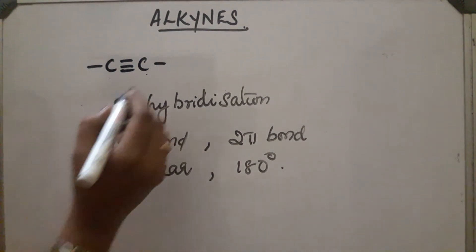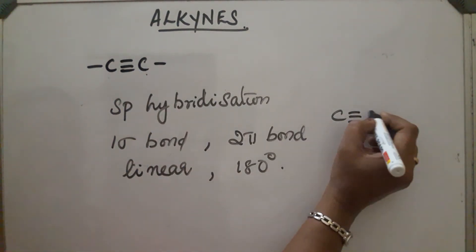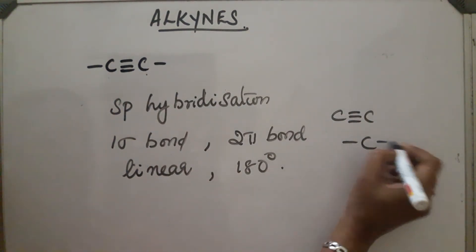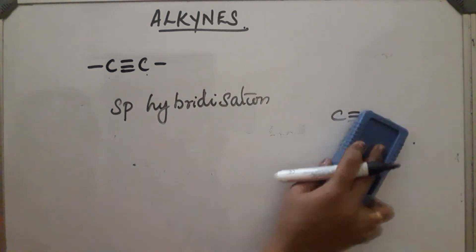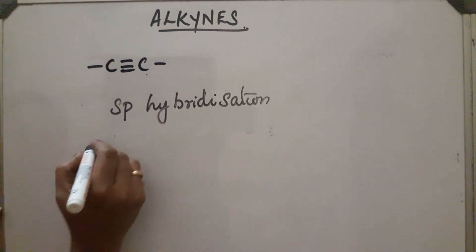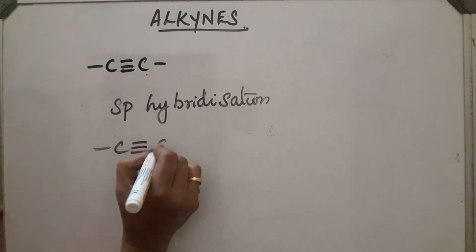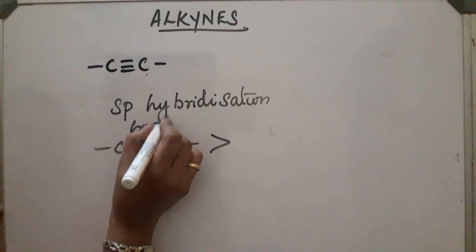In the case of acetylene, along with C≡C it also contains C–H bonds. Now, the order of bond strength is: C triple bond C has the greatest bond strength, followed by C double bond C, and then C single bond C.